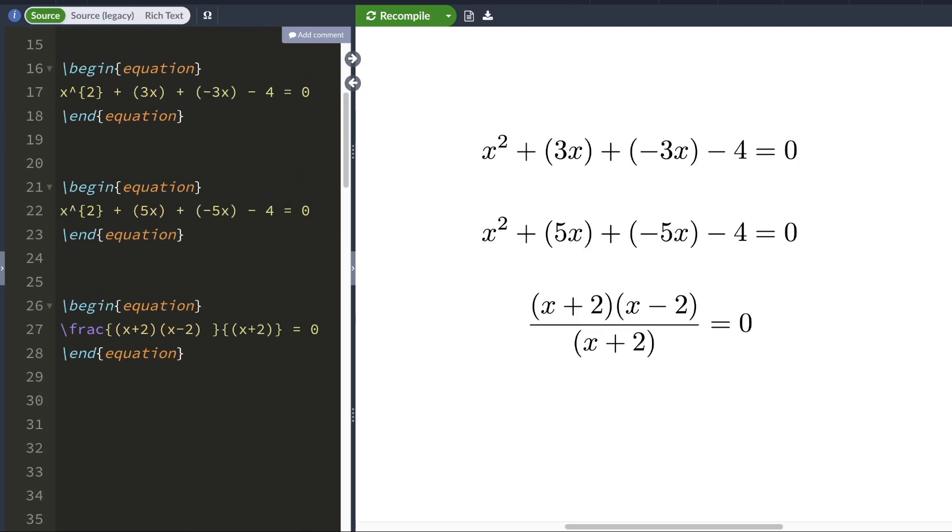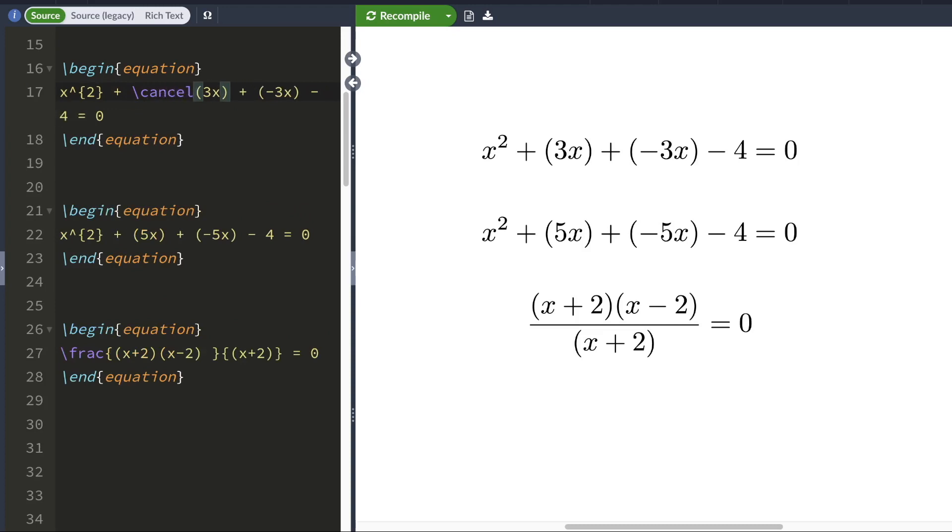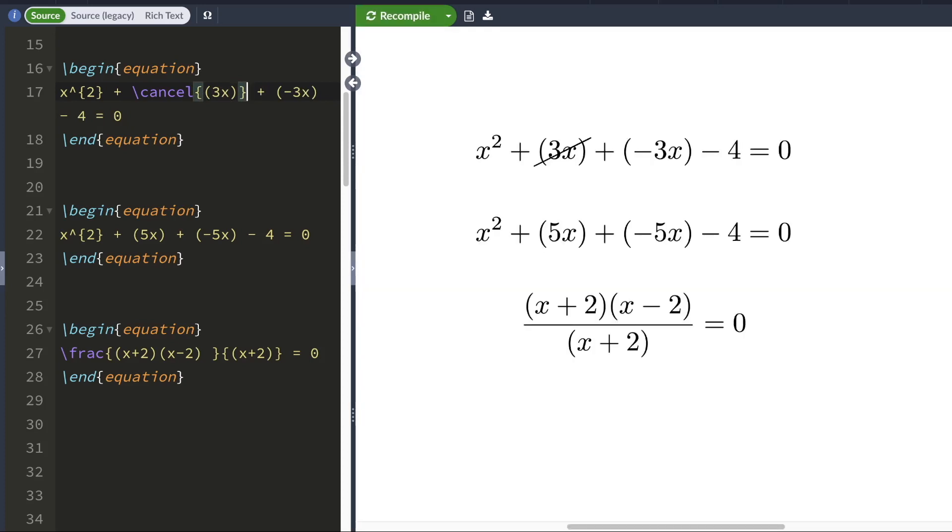Here I have a bunch of equations. I want to cancel out this 3x and negative 3x term. What I'm going to do is use the command backslash cancel. Because I want to cancel out this 3x, I'm going to house this 3x inside a set of curly braces. When I hit compile, LaTeX would cancel this 3x term out.